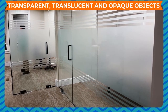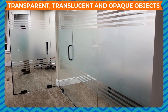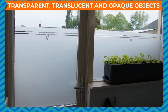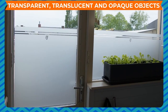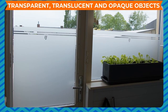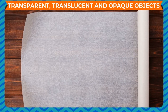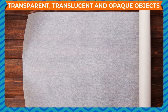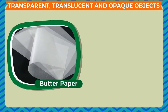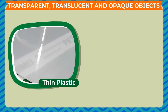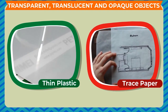Some materials allow light to pass through them only partially. Unlike transparent objects, light cannot pass through them completely. These objects are known as translucent objects — for example, butter paper, frosted glass, thin sheets of plastic, trace paper, etc.